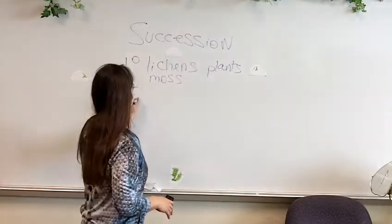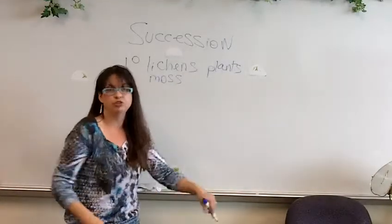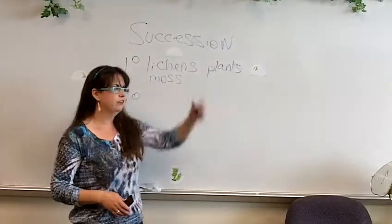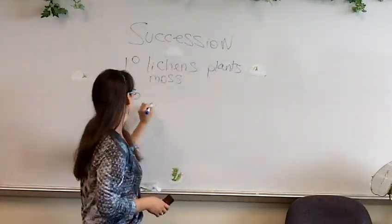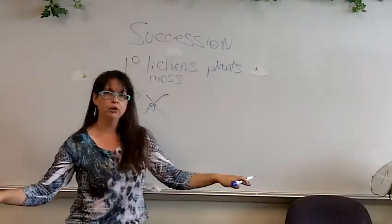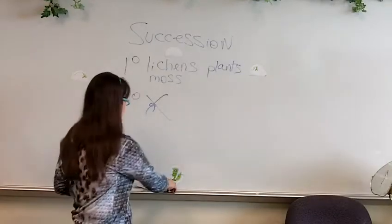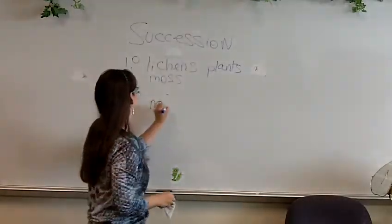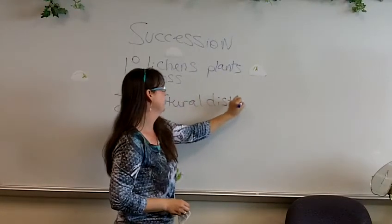Secondary succession is when you had an environment — let's say a prairie grassland, which is what North Texas is mainly about. If you have a prairie grassland fire from a lightning strike, the grassland is going to be burned down, and then you have bare soil after a disturbance such as a fire or a hurricane — anything like a natural disturbance. What starts to grow just depends on what the environment is.